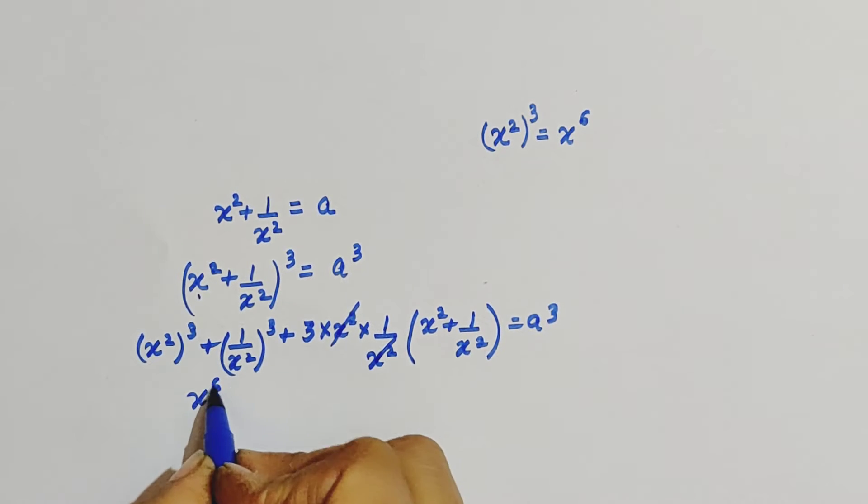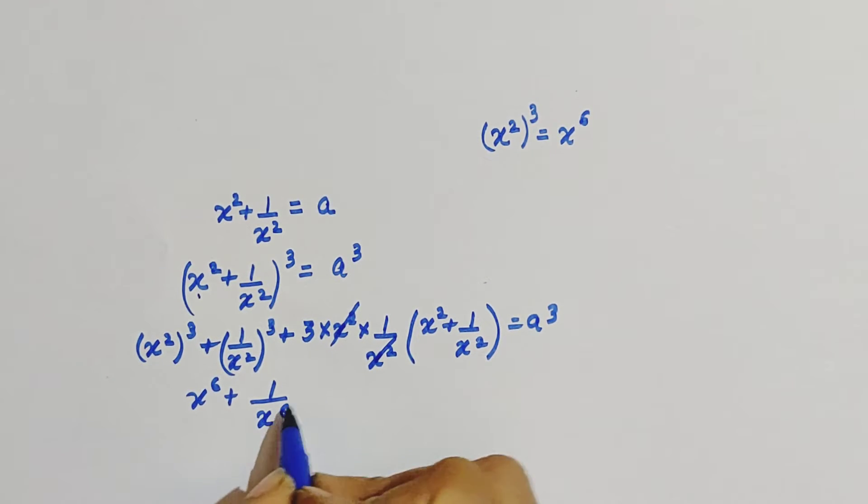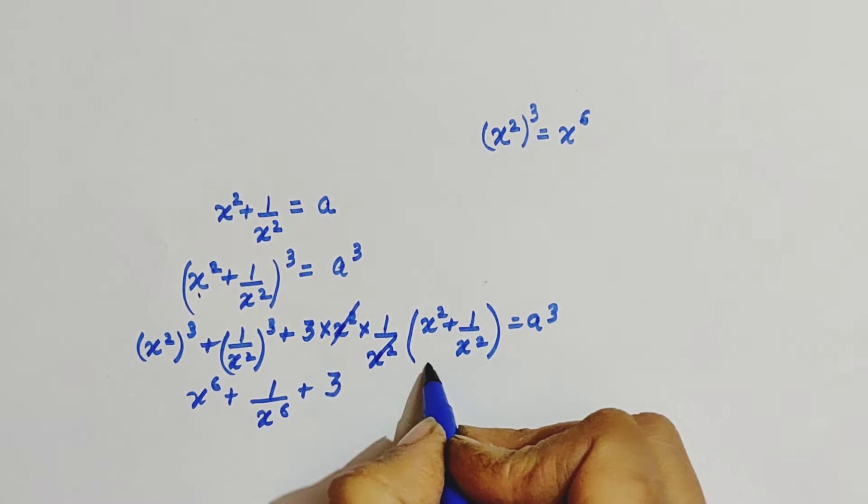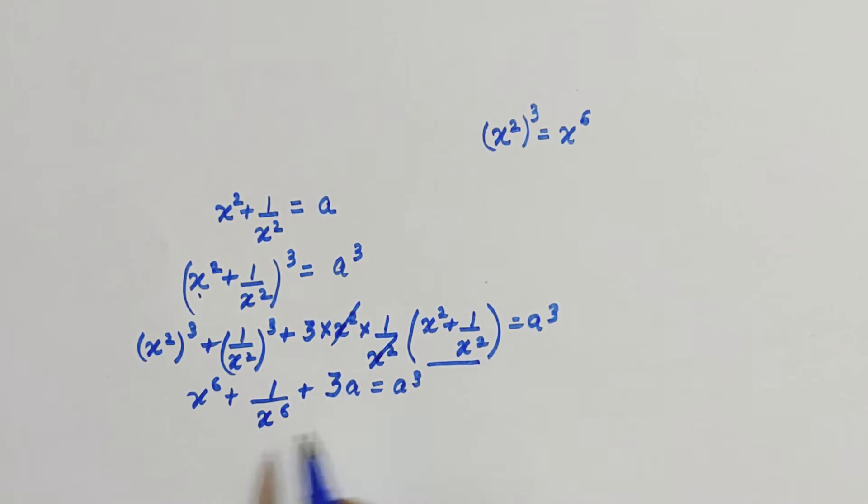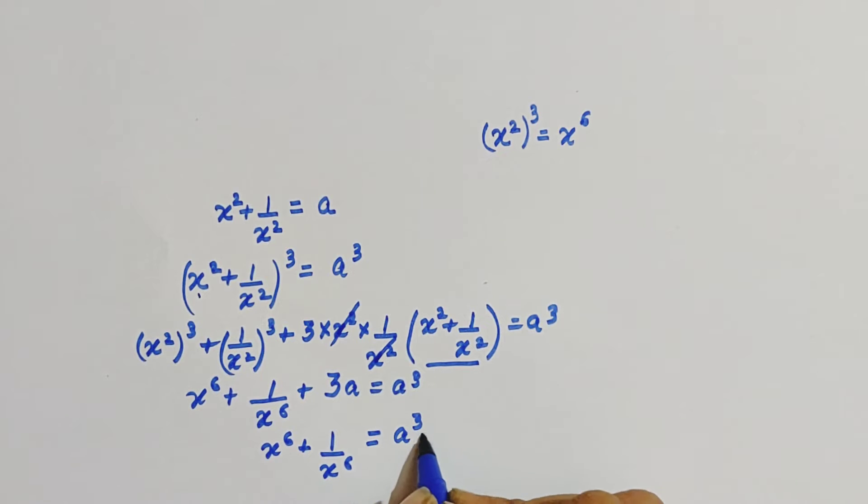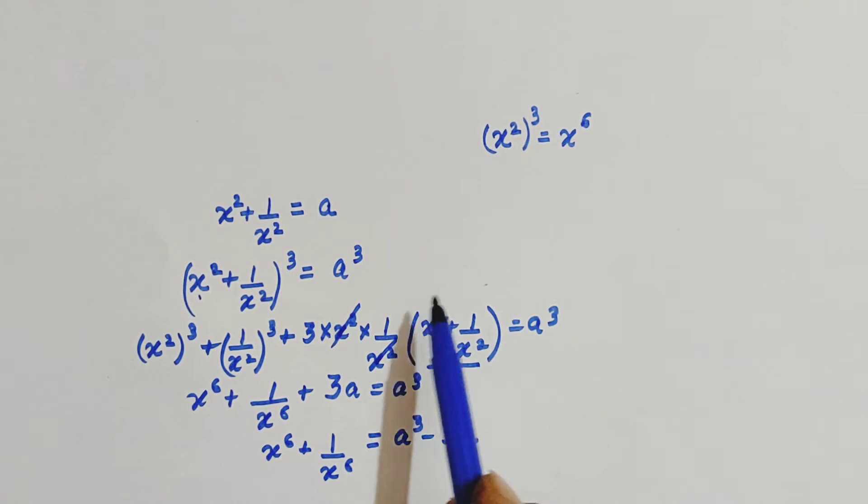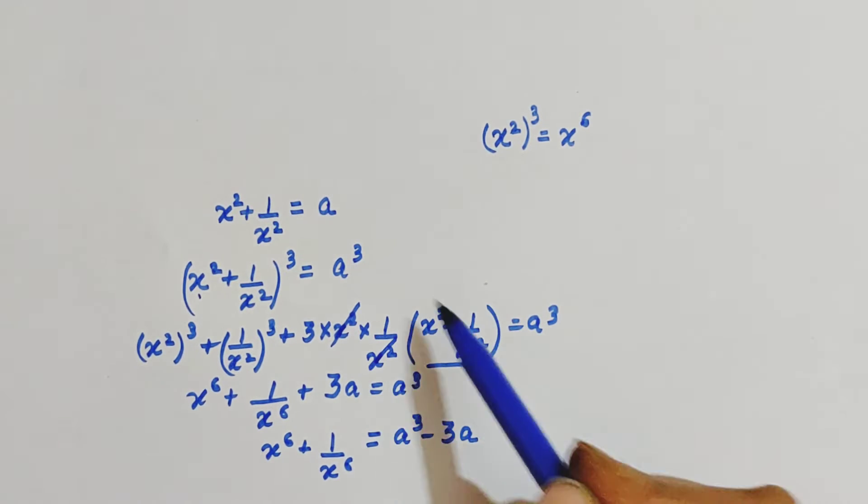This is 2 into 3, which is 6, plus 3 times of a. And this is a cube. Now x raised to what? a cube minus 3a. So this is the explanation of how we can get power 6. Now we will use a shortcut to evaluate these questions.